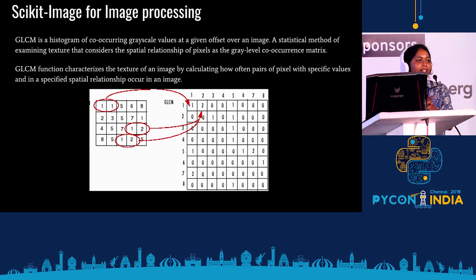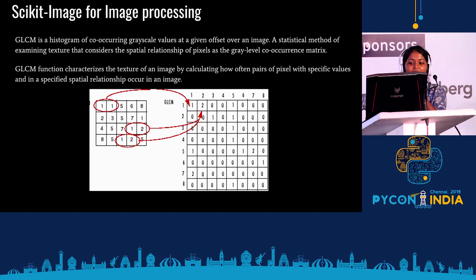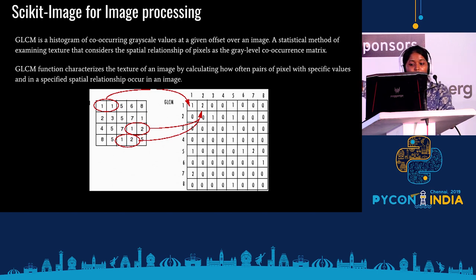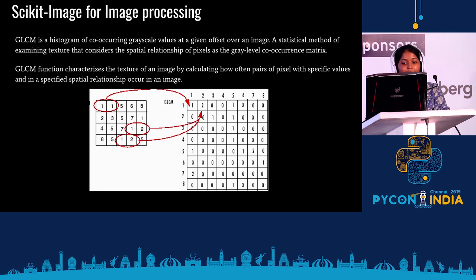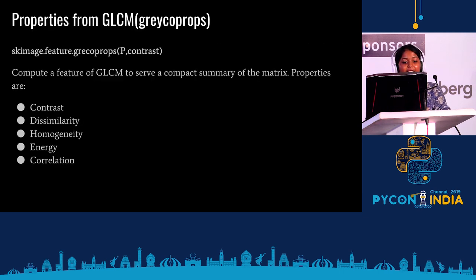So we get into GLCM. The co-occurrence matrix is a statistical method for examining texture data considering the spatial relationship — it keeps track of how many times certain pixel value pairs occur beside each other. This is done in gray level, hence the name gray level co-occurrence matrix (GLCM). There is a direct library for it in scikit-image called skimage.feature.graycoprops, which gives you features like contrast, dissimilarity, homogeneity, energy, and correlation. For detecting corrosion, we use two important features: contrast and energy or entropy.